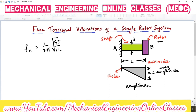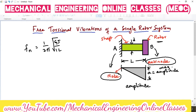One important point: the location where the amplitude is 0 is called a node, and the point where there is maximum amplitude of vibration is called an antinode. In this shaft-rotor setup, point A is the node because the shaft is fixed there, and point B is the antinode because maximum deflection occurs where the rotor is attached.